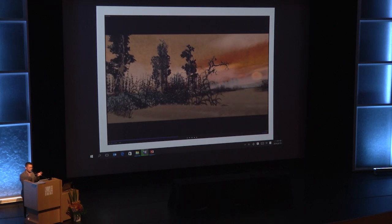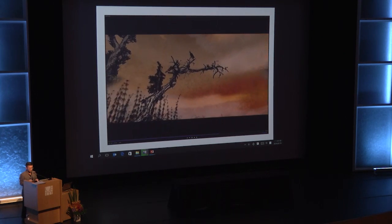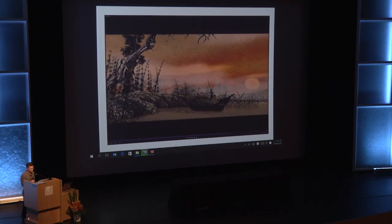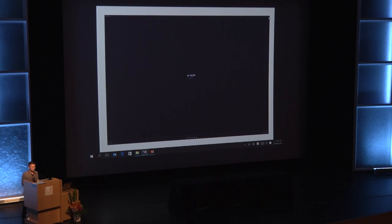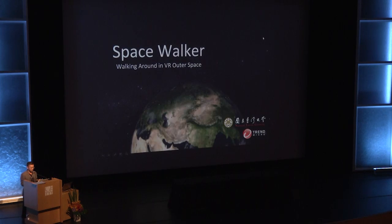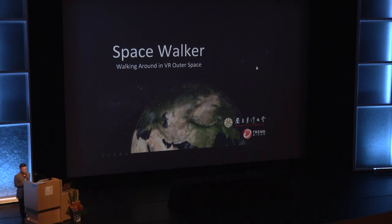On the right is the original painting and on the left is the virtual environment we rendered, so people can have a feeling of touring into the painting. Because this is a full virtual reality system, the user can interact — you can look up, look down, and change the direction of your viewing. We are also working on a space walker to let people walk around in outer space, above the earth, or even to Mars. These are to be demonstrated at the National Museum of Natural Science.